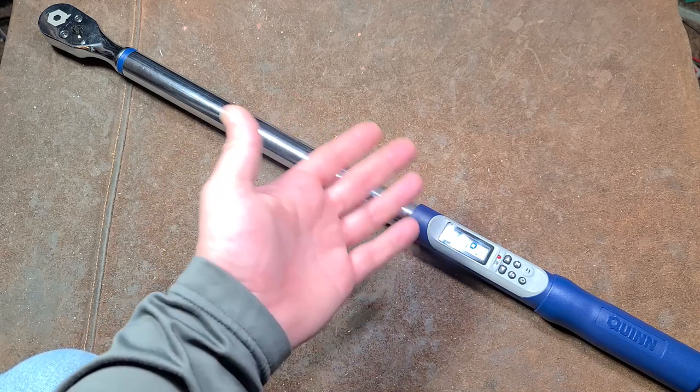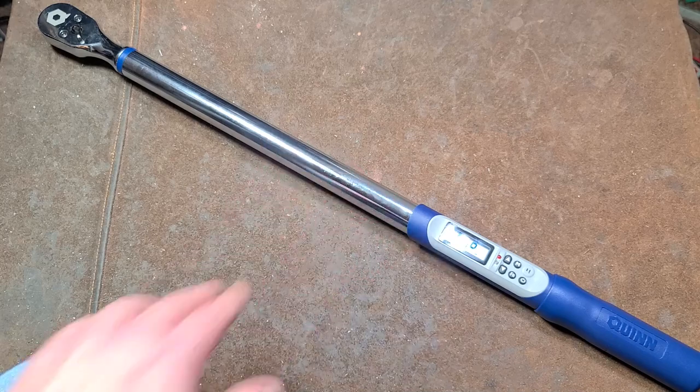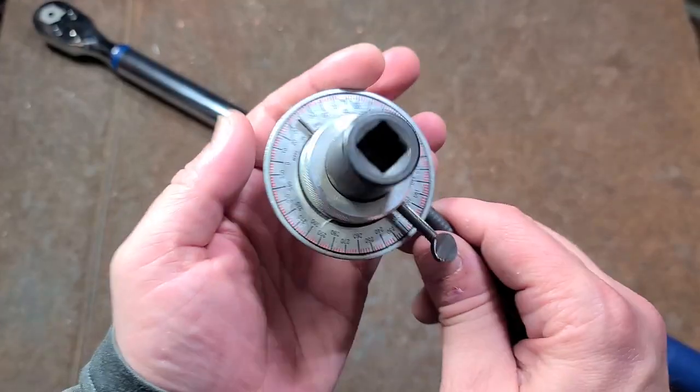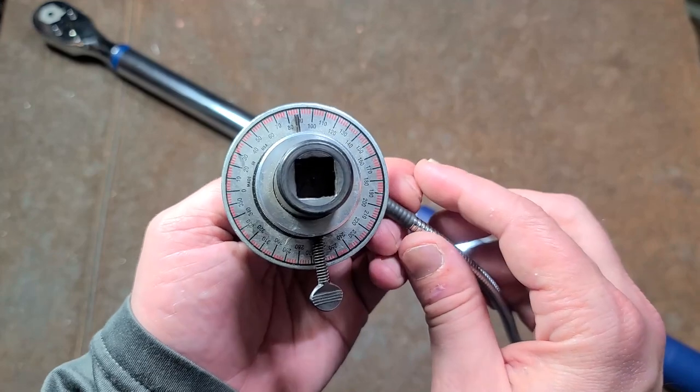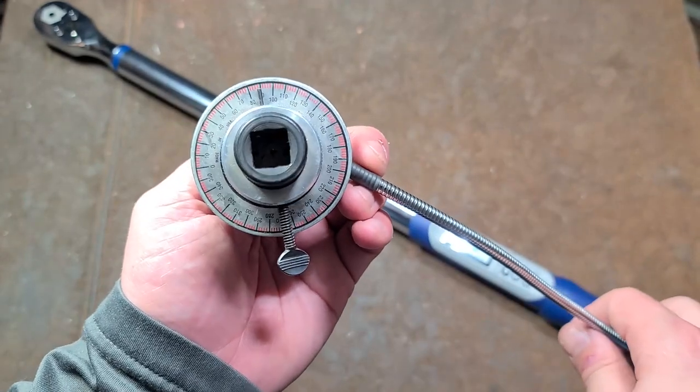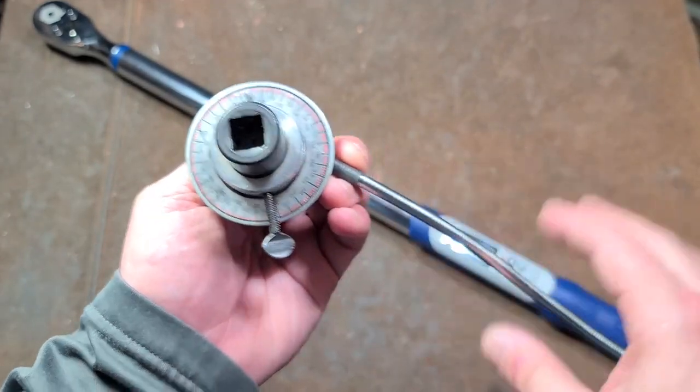Pretty frustrating. Torque angle is really important - they shouldn't have included it on this wrench because it's not something you can rely on. Let's just flat out, you need to rely on something like this which is just measuring how far the darn fastener's turning.